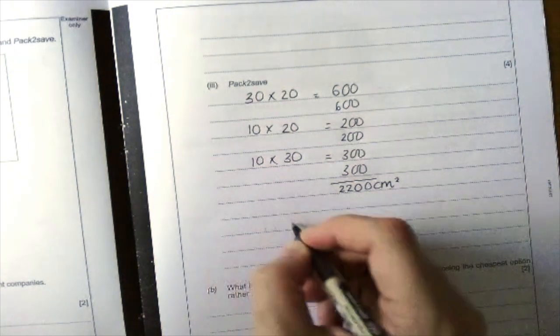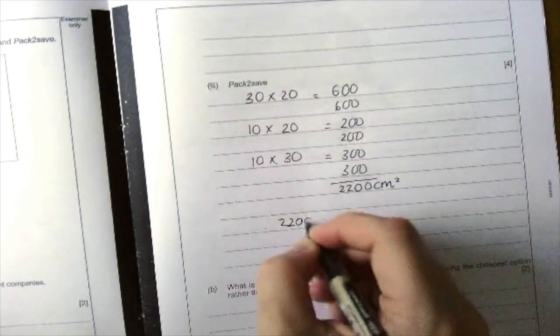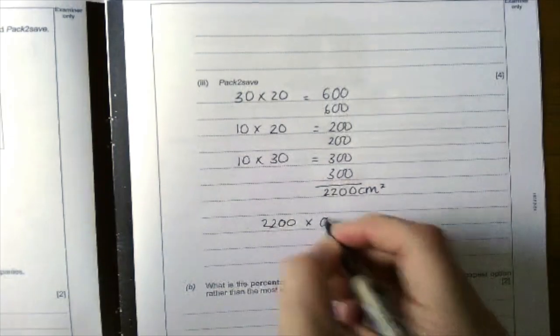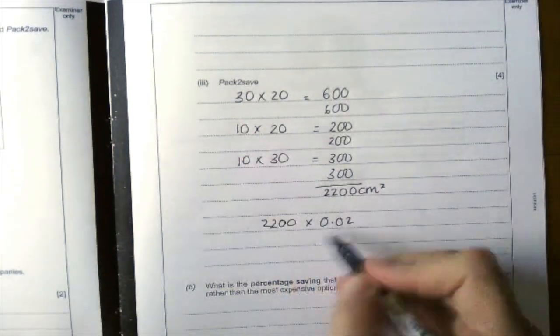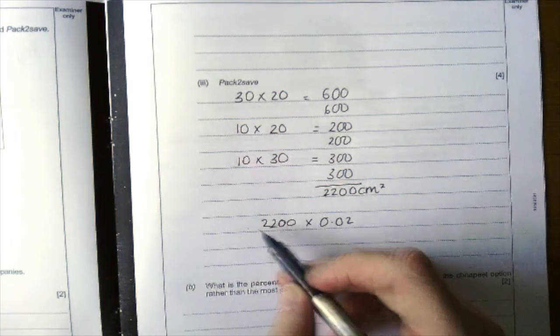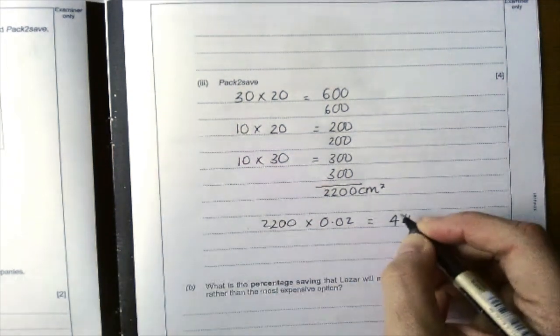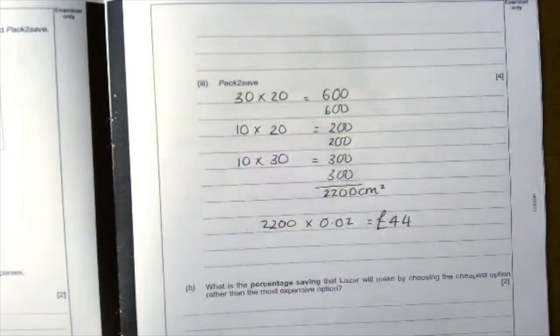We're going to times that. So we've got 2200 times by 0.02. Again those zeros can make those disappear. So it's 22 times 2 which is 44 pounds.